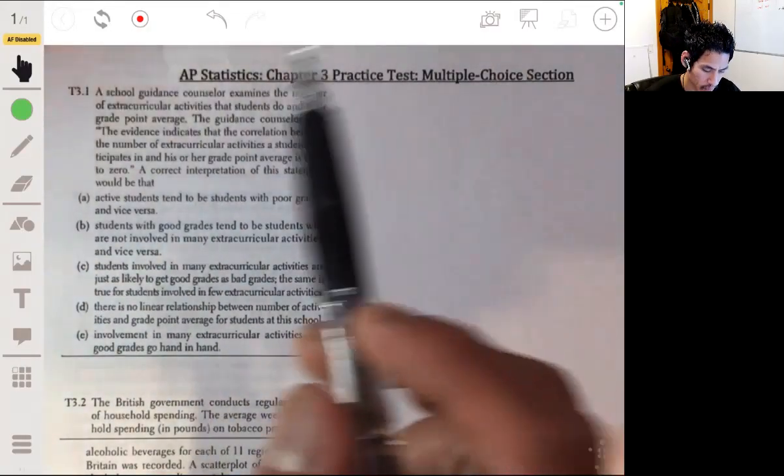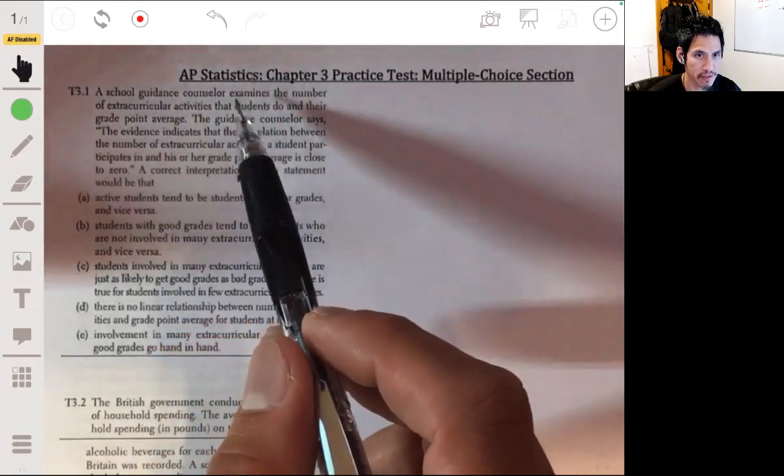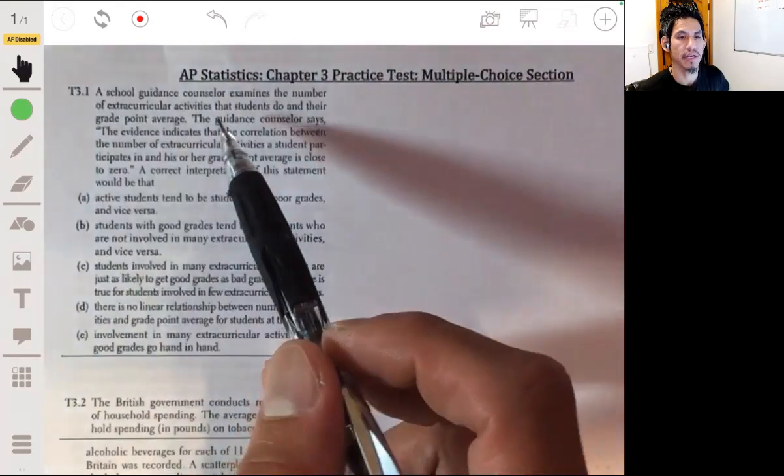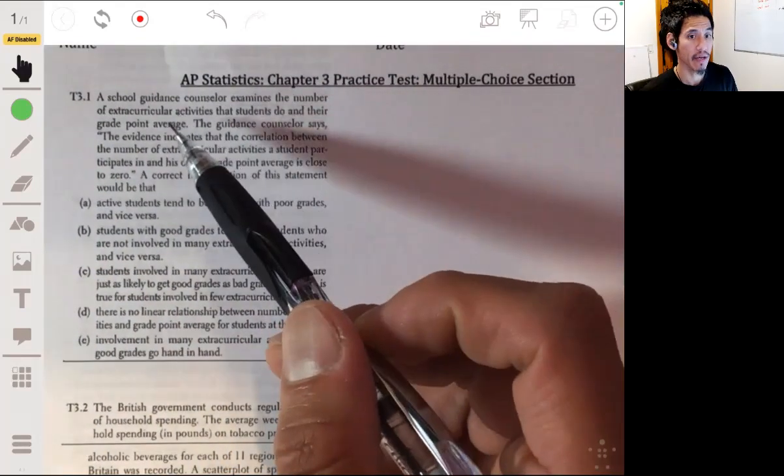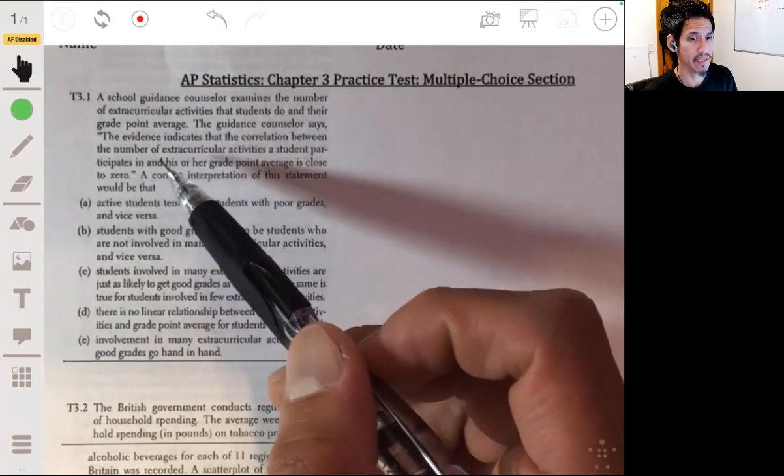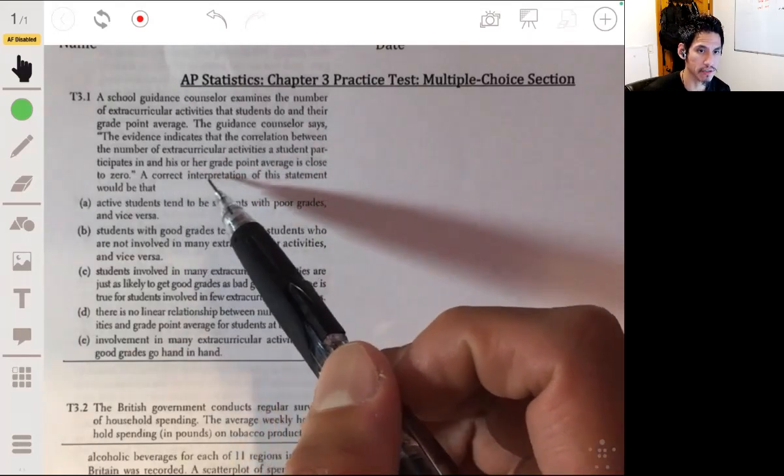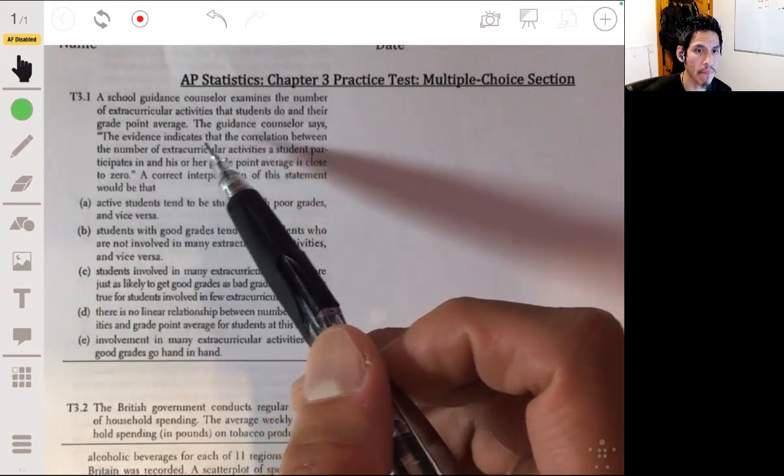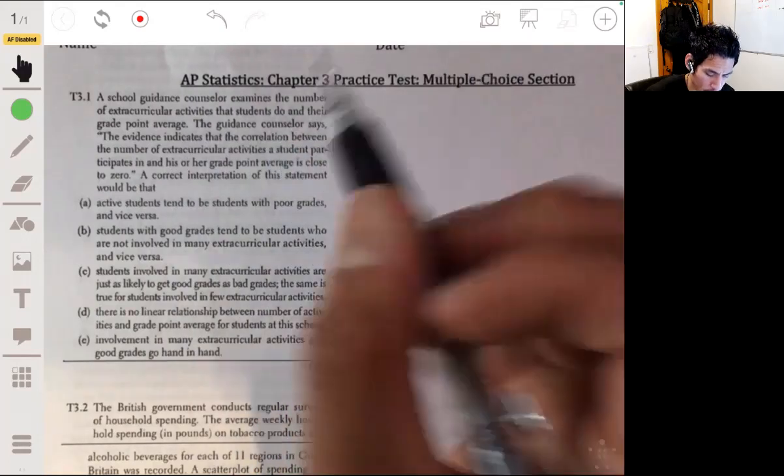All right, let's look at this first problem in the Chapter 3 Practice Test. We have a school guidance counselor who examines the number of extracurricular activities that students do and their grade point average. The guidance counselor says the evidence indicates that the correlation between the number of extracurricular activities a student participates in and his or her grade point average is close to zero. A correct interpretation of this statement would be that...